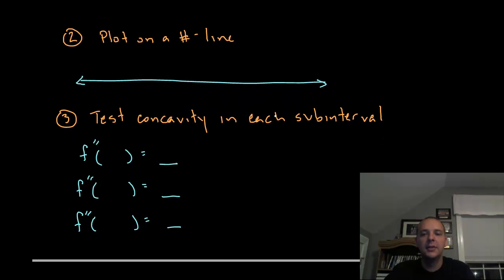So we're going to take the zero and the two and put them on a number line. These two places are where the second derivative equals zero. Next we're going to test the concavity in each subinterval. Subintervals are the intervals between these points.